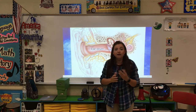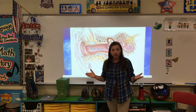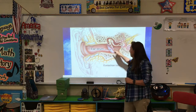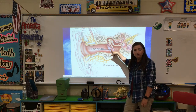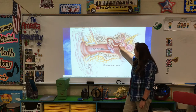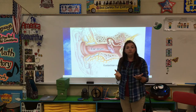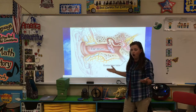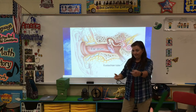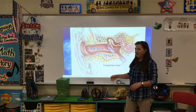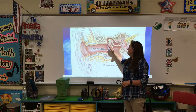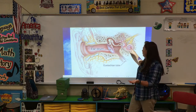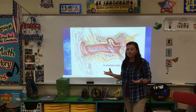Right after the eardrum vibrates, we've got three of the littlest bones in your whole body. You've got over 200 bones in your body, but in your ear are the littlest ones. One of them is touching the eardrum, here's another one, and then right here is another bone. They're so little, sensitive, and fragile. Since one of them is touching the vibrating eardrum, the bones are vibrating too — each one vibrating the next.